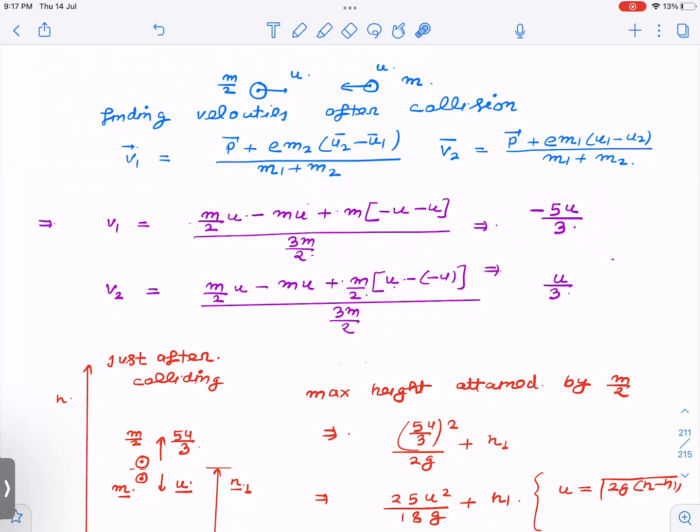Then v₂ also - I get this is the same thing, and then m₁, m₁ is m. And then after that u₁ minus u₂, u₁ minus u₂, so you get u/3. Fine. So -5u/3, that means its velocity will be inverted.